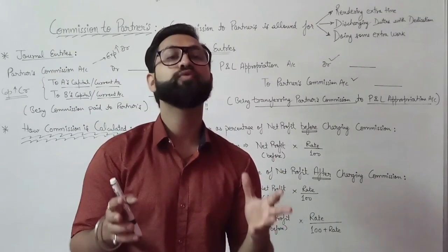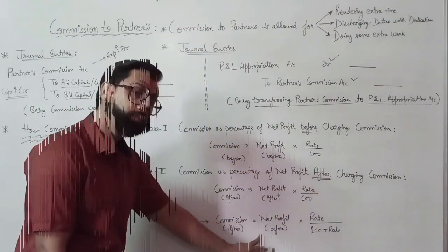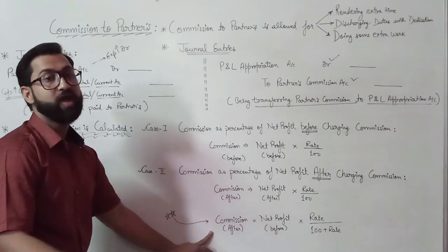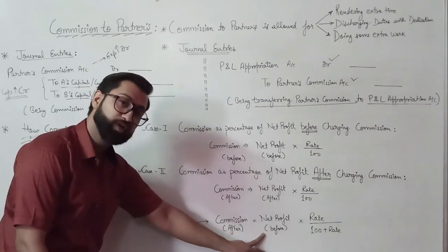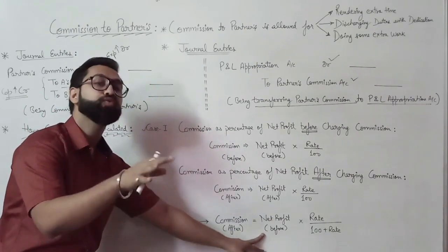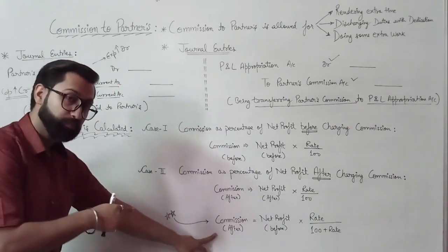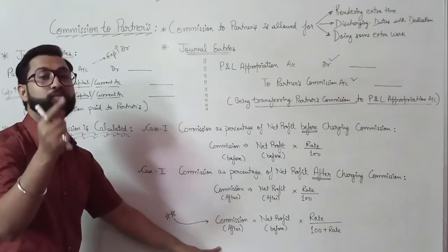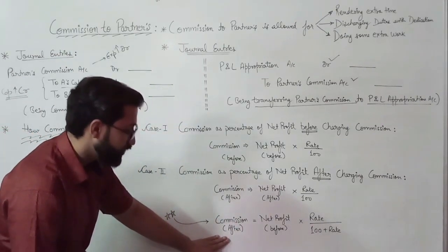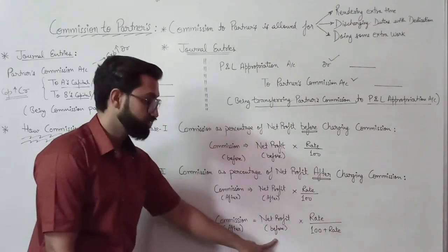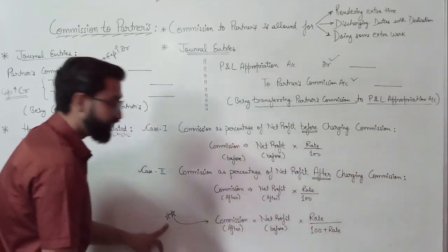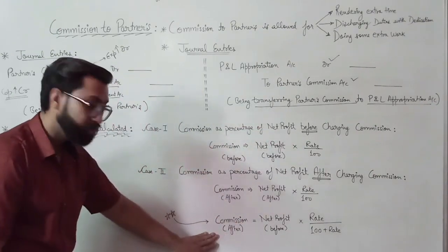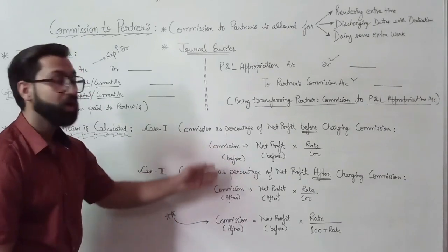The problem arises when we deal with a special case: net profit is given before charging any commission, but you have to calculate the commission after charging such commission. In that case, to convert 'before' into 'after', the formula is modified: Commission (after charging) = Net Profit (before charging) × Rate / (100 + Rate). This is very important. Generally, questions are asked by this method only. In this method, the amount of commission will be less compared to the above methods.